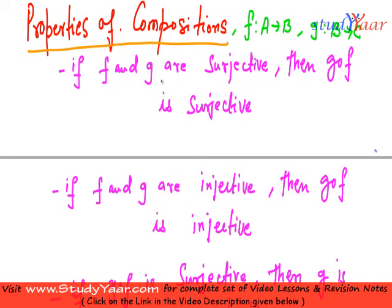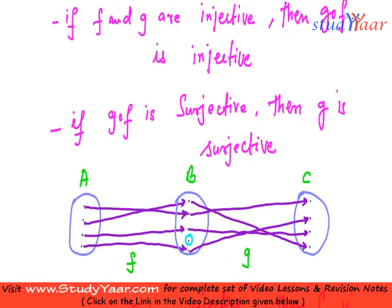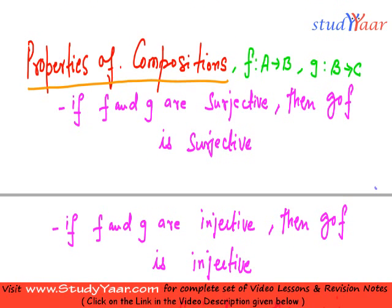If f and g are surjective, then g of f is going to be surjective. What is surjective? Surjective is onto.